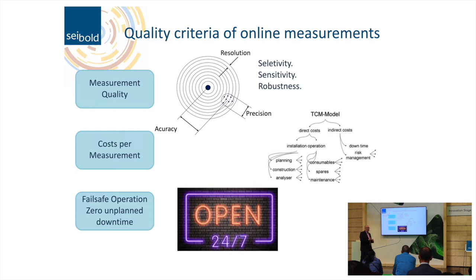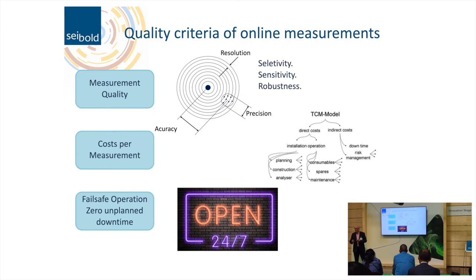We developed a new model for cost per measurement. It means not only the operational cost or the investment in instruments, but also people costs for maintenance, people costs for failures, missing data, and risks. If you have toxic reagents or toxic material, this will also add up costs. And of course, fail-safe operation — downtime is never an option. You must always deliver meaningful data, because important decisions are based on the data you provide.